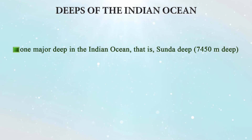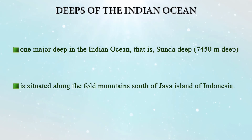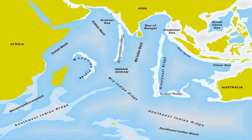Coming on to the deeps of the Indian Ocean, there is only one major deep — the Sunda Deep, located in the Java Trench. It is situated along the fold mountains south of Java Island of Indonesia. In the figure on the bottom reliefs of the Indian Ocean, the Java Trench is located just below the Java Island.